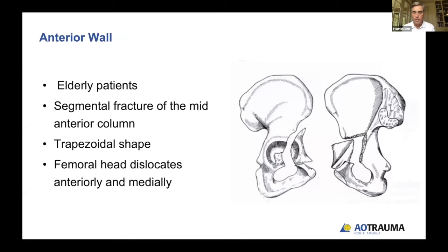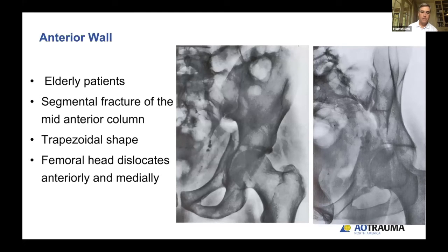Anterior wall fractures are more common in older patients. It is basically a segmental fracture of the middle portion of the anterior column — a fracture that exits usually below the anterior inferior spine, takes off the anterior wall and the anterior column with a portion of the articular surface, and then has a transverse fracture across the bottom portion of the pubic ramus to separate it away. It's almost always associated with femoral head dislocation except in very low fracture patterns, and results in a trapezoidal piece of bone. If you see two breaks in the mid-portion of the iliopectineal line, it's usually going to be an anterior wall.